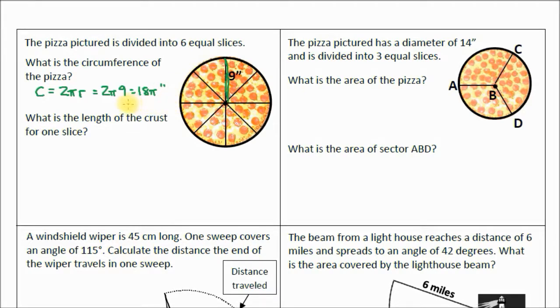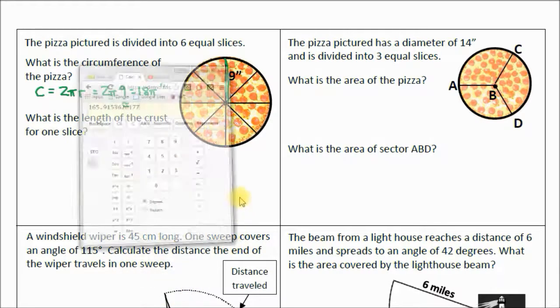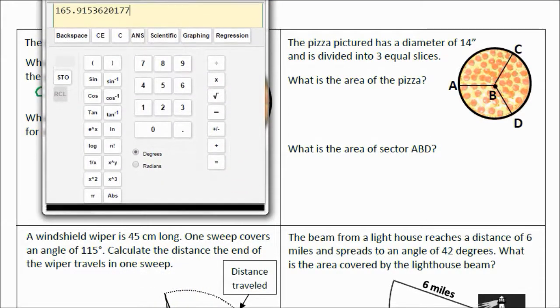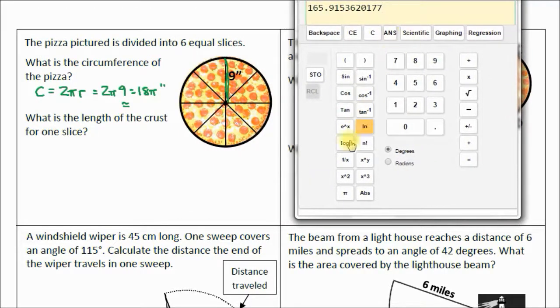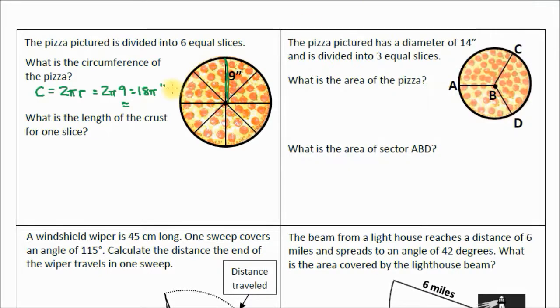Just for comparison later, let's go ahead and convert that to a decimal so we can compare it to our final answer. So hold on a second and move this over. 18 times π equals 56.5. So it's approximately 56.5 inches is the length around this pizza.